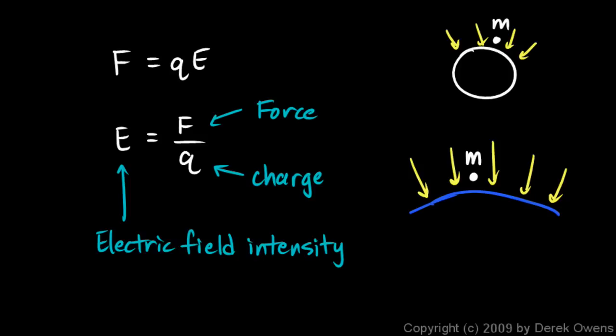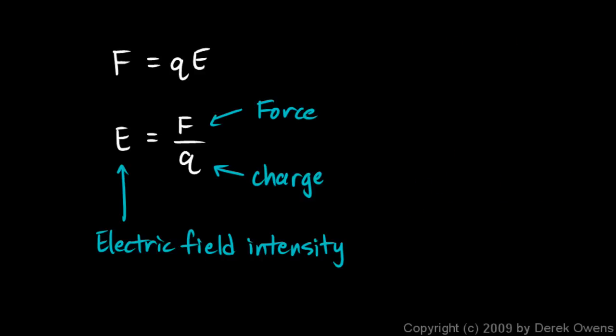We could have an electric field that exerts a lot of force on a given charge. That would be a strong electric field. Or we could have a weak one that exerts a smaller force on a given charge. And remember that force is measured in newtons, and charge is measured in coulombs. So the electric field intensity is measured in newtons per coulomb, and that should make sense if you understand that electric field intensity is force per charge. How many newtons of force it exerts per coulomb of charge that is placed in the field. So that's electric field intensity E. Force per charge, measured in newtons per coulomb.